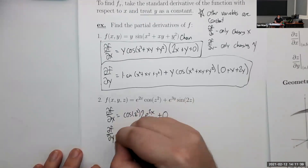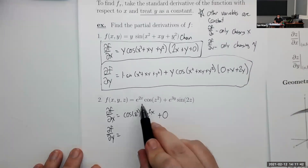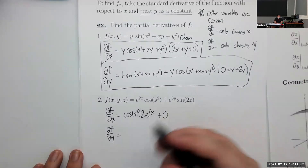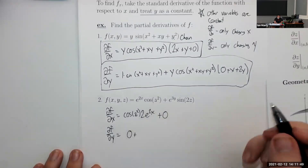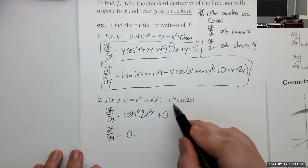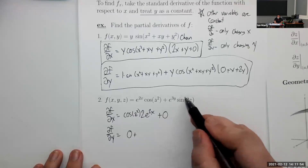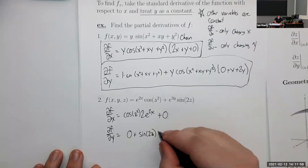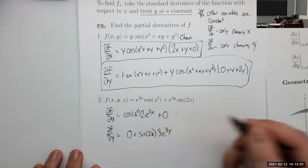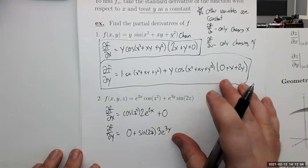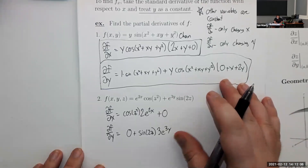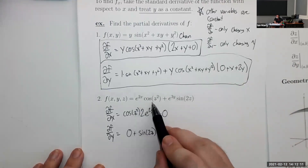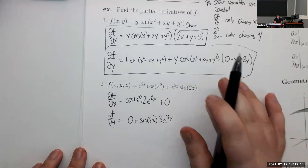For partial f partial y: the first term has no y's, so it's a constant — derivative is zero. The second term: e^(3y) has no y in the cosine piece, so that's a constant times the function. The derivative of e^(3y) is 3e^(3y). The cosine term has no y's, so its derivative is zero. Result: e^(2x)·cos(z²)·0 + 3e^(3y).